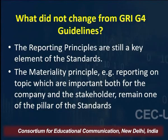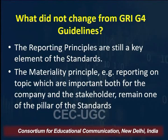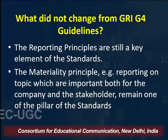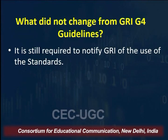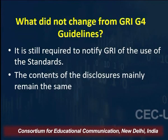The new structure aims at restructuring the G4 guidelines rather than adding entirely new contents. There is a new modular structure, and the standards are composed of three main universal standards and thirty-three topic-specific standards. Earlier, companies reported as per G4 guidelines; now they report as per the standards. What did not change from G4: reporting principles are still a key element of the standards, the materiality principle still holds true, and the content of disclosures mainly remains the same.